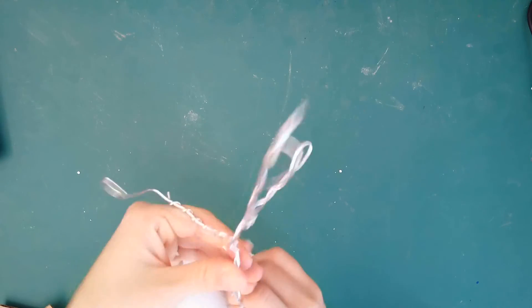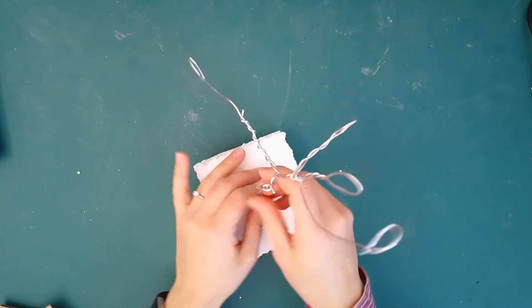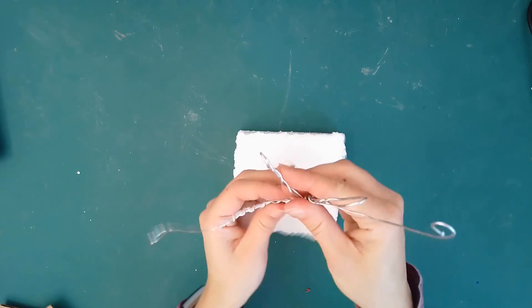If it's not perfectly stable right now, no worries. Because when you add more of the foil and eventually when we add the plaster, that's going to make it even more secure.